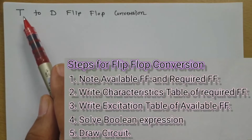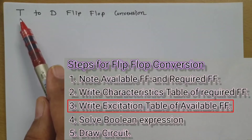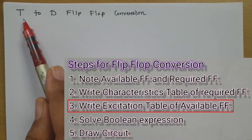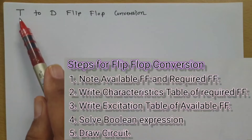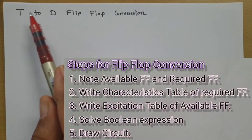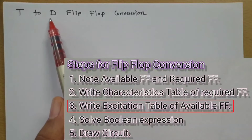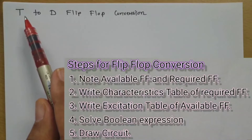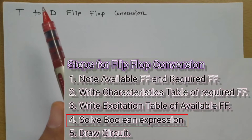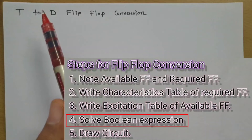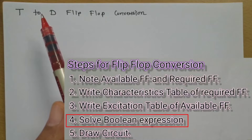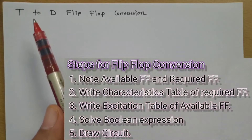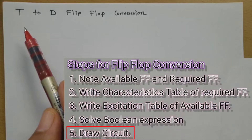The available flip-flop is the T flip-flop, so we need to write the excitation table of the T flip-flop. By placing the excitation table values into the characteristic table of the D flip-flop, we can obtain a Boolean expression by solving the Karnaugh map. Once we solve the K-map, based on the Boolean expression we can form the circuit of the flip-flop conversion.